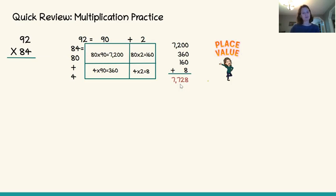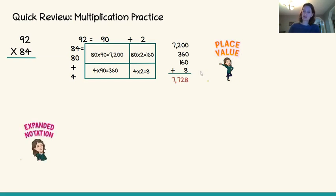This is a very quick review, as you can see. Most of you are very familiar by now with the place value sections model. The other method we have learned is expanded notation, which is very similar to the place value sections method — we are just writing it slightly differently.